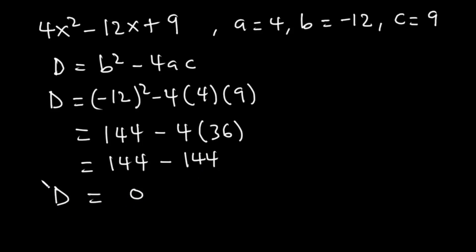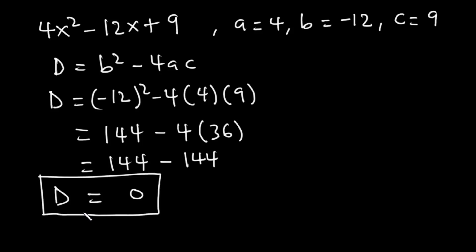Since the discriminant is equal to 0, the equation will have two real and equal roots — or sometimes we can say it has only one real root.